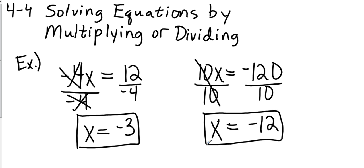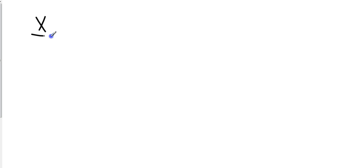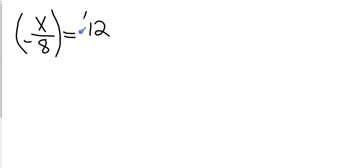So that's what multiplication looks like. Let's take a look at a division problem. A division problem is going to look like a fraction. We might have x over negative 8 equals 12. Anytime you see the fraction look, you should think division. The opposite of division is going to be multiplication. So I'm going to multiply both sides by whatever number I'm dividing by — in this case, negative 8. So I multiply both sides by negative 8.